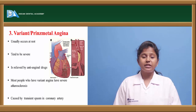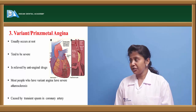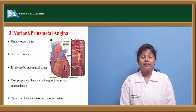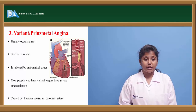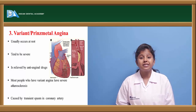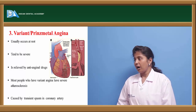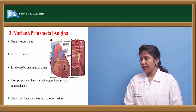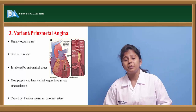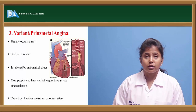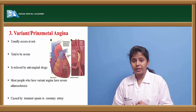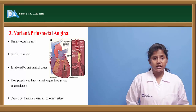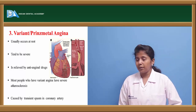Variant angina or Prinzmetal angina also occurs at rest and patients must be monitored closely since the chest pain can occur unpredictably. It is relieved only with anti-anginal drugs. It is mainly seen in people prone to severe atherosclerosis, where narrowing of blood vessels triggers this spasm-type angina.